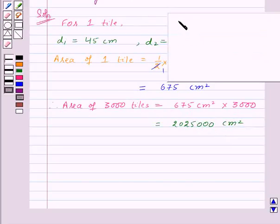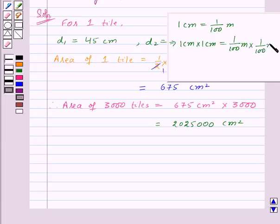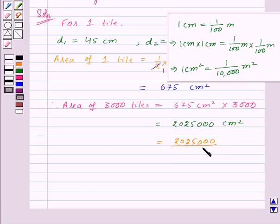Now we know that 1 centimeter equals 1/100 meters. This implies 1 centimeter × 1 centimeter equals 1/100 meters × 1/100 meters. So that means 2,025,000 centimeters square will equal 2,025,000/10,000 meters square, and this will be equal to 202.5 meters square.